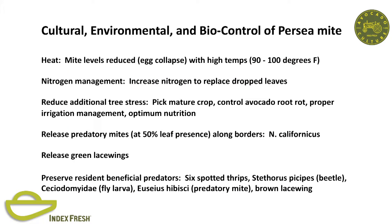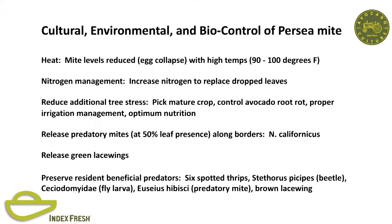What can you do as a grower, or what can you depend upon besides chemicals? Heat for thrips is a little more dependable; heat for perseamite is a little touchier. You need extended high temperatures—above 90, even 100 degrees—for four days with no cooling at night. You'll get egg collapse, and with that you'll get a dip in the population for about two weeks, then you'll see it slowly come back. You can manage mites with nitrogen, specifically organic growers or growers with young trees that don't want to apply pesticides—you can keep pumping nitrogen to the trees to replace lost leaves, sort of masking the effect of perseamite. Reduce additional tree stress, pick your mature crop, control root rot, optimum nutrition.